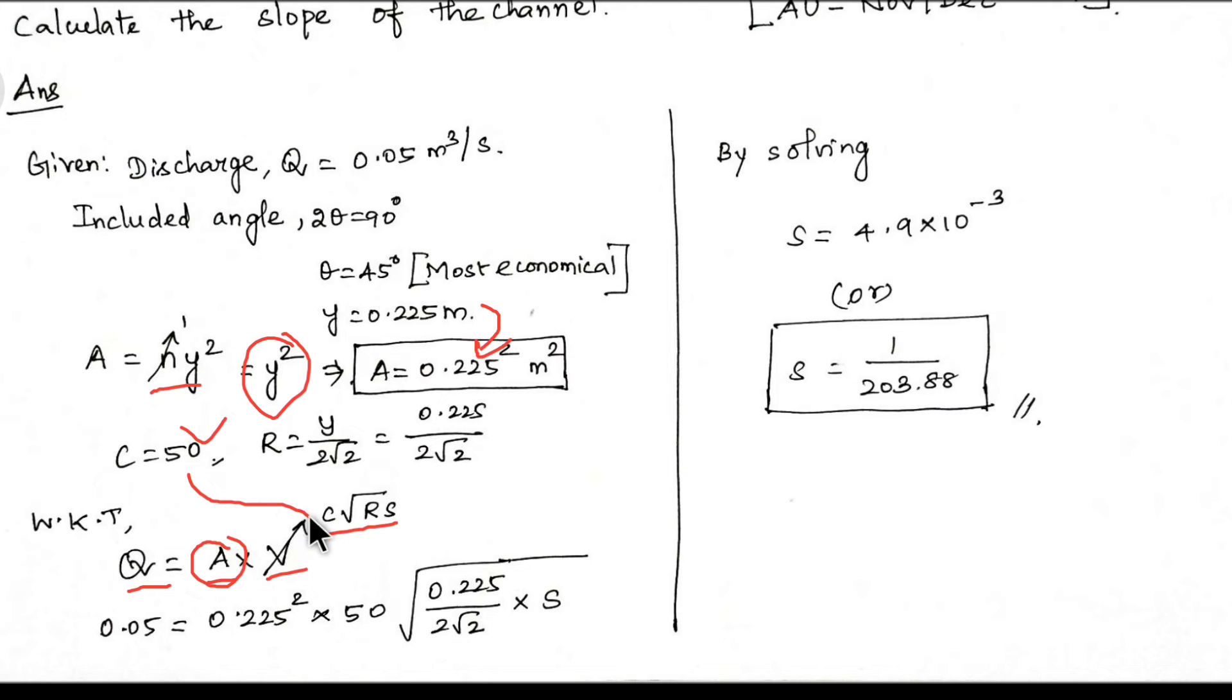Next, c. Chezy's constant value is 50, so we will substitute here. R equal to y divided by 2 square root. Y value is 0.225 divided by 2 root meter. We will substitute that value.